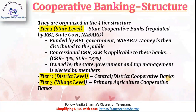Cooperative banks are organized in a 3-tier structure. Tier 1 is at the state level — State Cooperative Banks, regulated by RBI, State Bank, or NABARD, and funded by RBI, the government, or NABARD. CRR and SLR are applicable to these banks. They are owned by the state government and top management is elected by members. Tier 2 is at the district level — Central or District Cooperative Banks. Tier 3 is at the village level — Primary Agriculture Cooperative Banks, which serve agriculture and allied services.